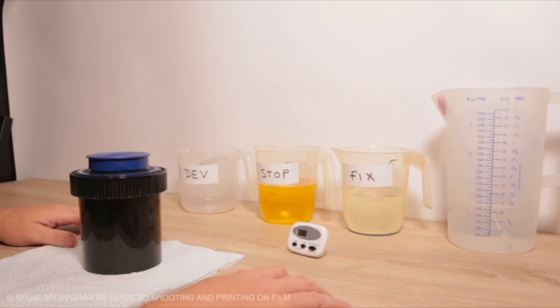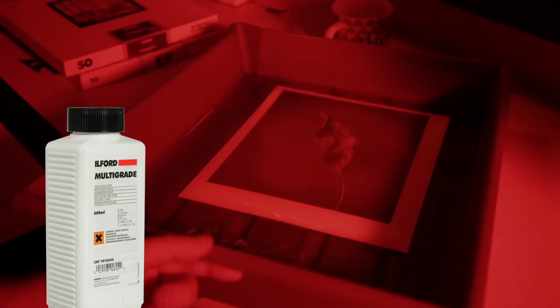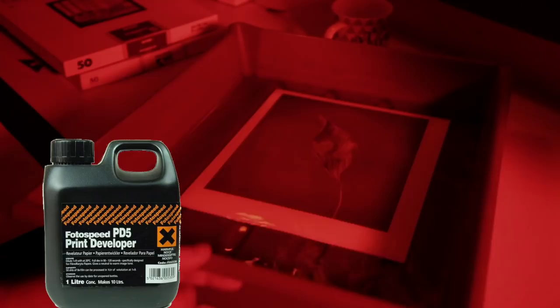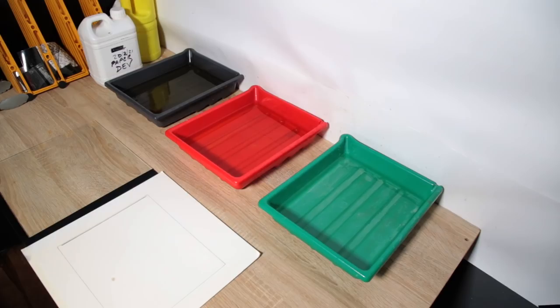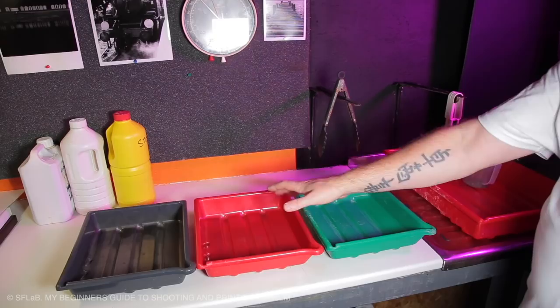You've already got your fixer and stop bath, but you'll also need a print developer. I use Ilford's multi-grade, but there are other paper developers such as Photospeed PD5 that is slightly cheaper. You're going to need three trays: one for developer, one for stop bath, and one for fixer. These don't have to be expensive trays as you're only making a few small 4x5 prints. You can use sandwich containers or cat litter trays.